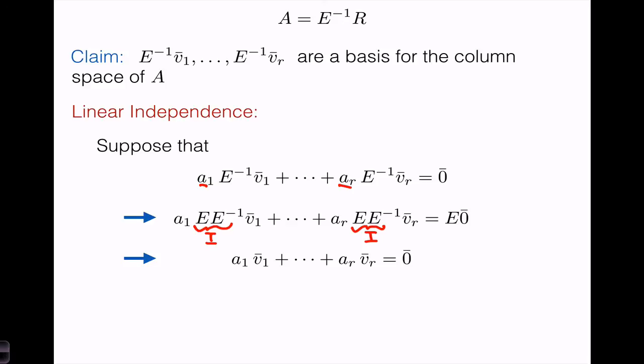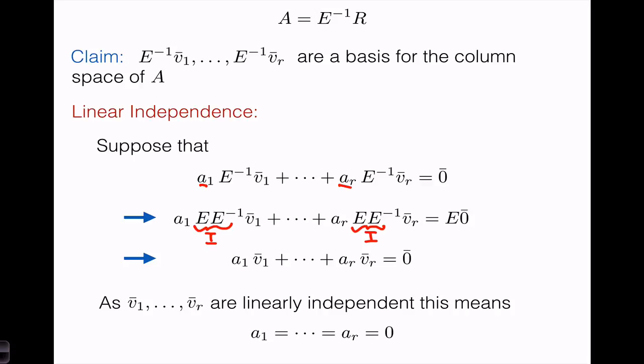We know that V1 through Vr are linearly independent, because they are a basis for the column space of R. Therefore, if a linear combination of V1 through Vr equals the zero vector, all the coefficients must be zero. So A1 through Ar must all be zero, and thus we have proven what we wanted to. This completes the proof that E inverse V1 up to E inverse Vr are a basis for the column space of A.